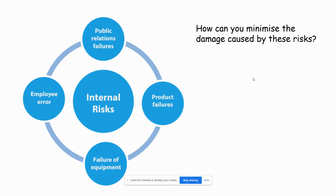Here are some examples of internal risks, because they all come from within the company — either from your employees, your product, or your equipment. We want to talk about how we can minimize the damage caused by these risks. Pause the video, have a go yourself thinking about them, and I'll talk about some answers in a minute.